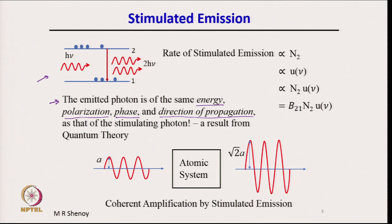In stimulated emission, the emitted photon is in phase with the stimulating photon, leading to coherent amplification of the input. In a wave picture, an incident wave of amplitude a produces an output of amplitude √2·a by coherent amplification, because intensity is proportional to the mod-square of the amplitude. In a photon picture, with hν as input, the output has 2 photons of energy hν, giving 2hν total.